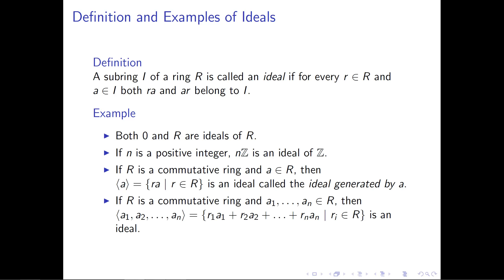We can generalize this: what if instead of starting with one element, we start with n elements and build the smallest ideal containing those elements? That's the ideal generated by a₁ through aₙ, denoted ⟨a₁, a₂, ..., aₙ⟩ using angular brackets with elements separated by commas.